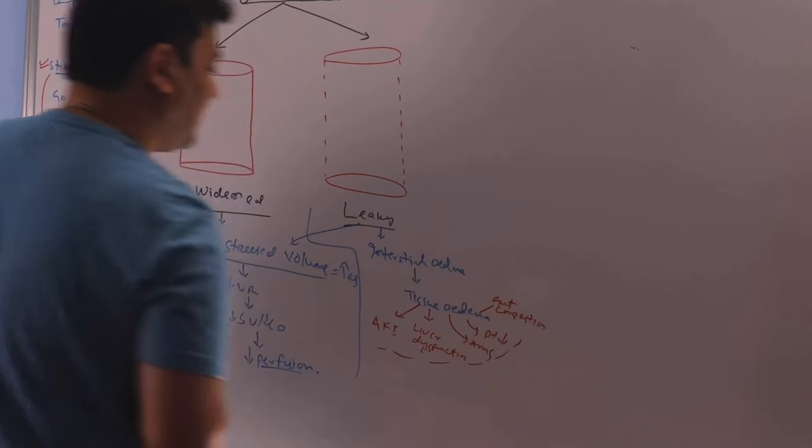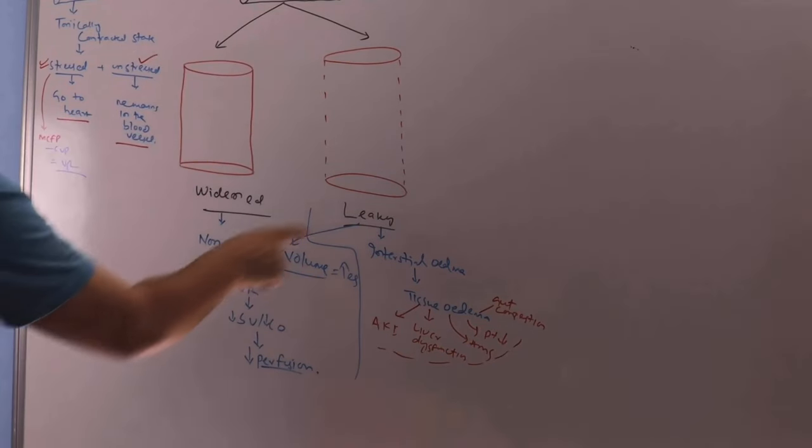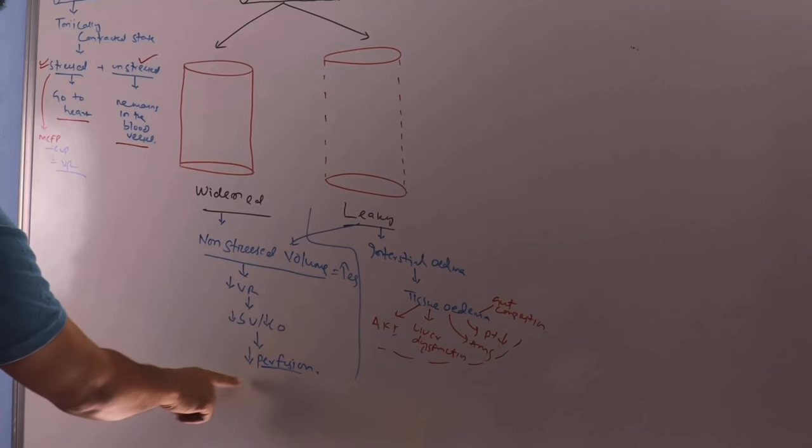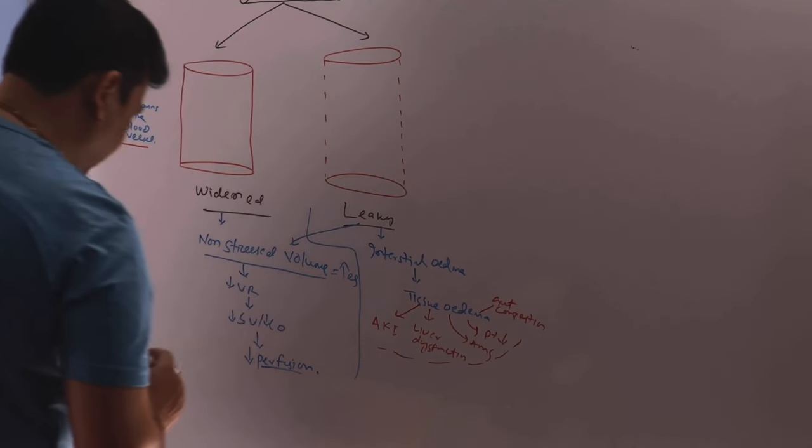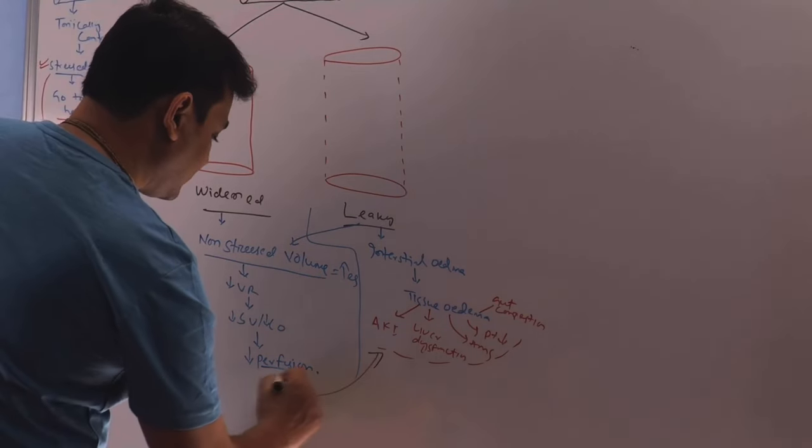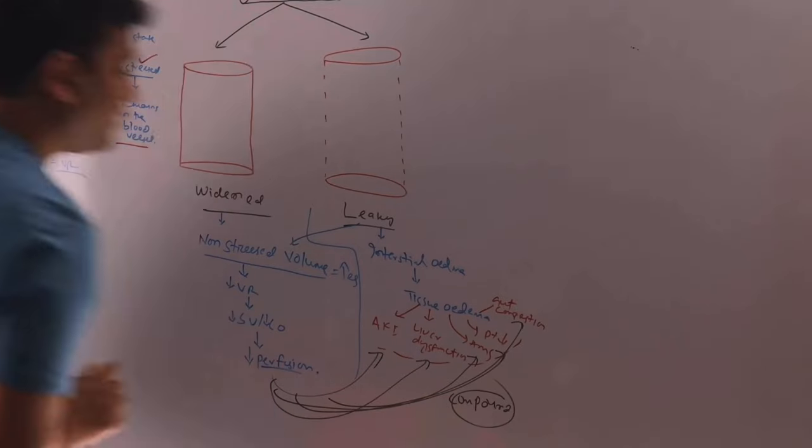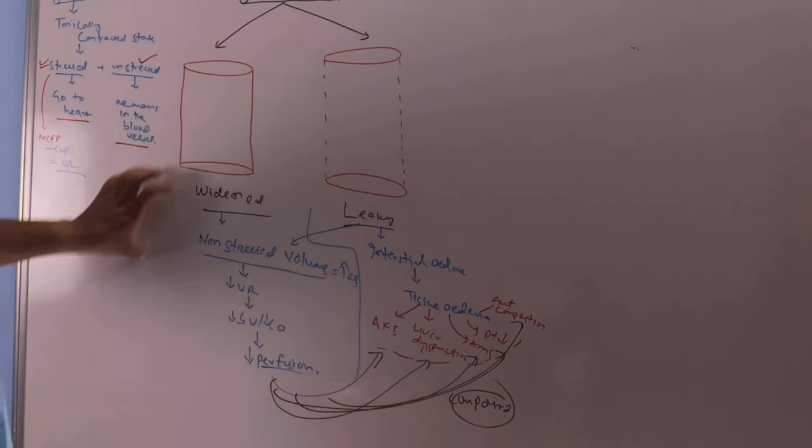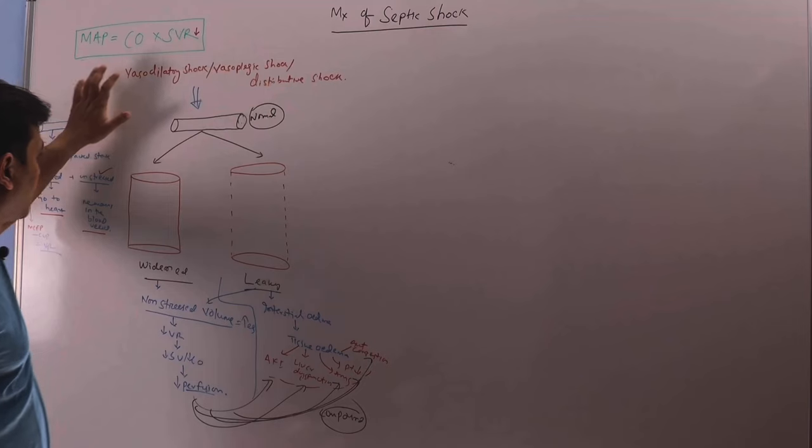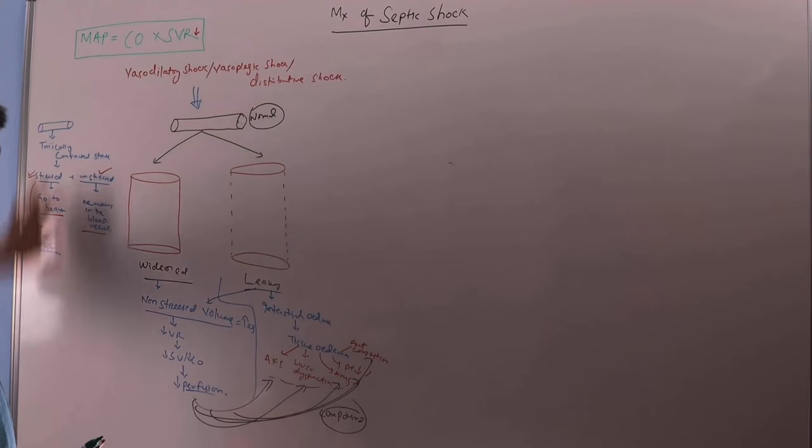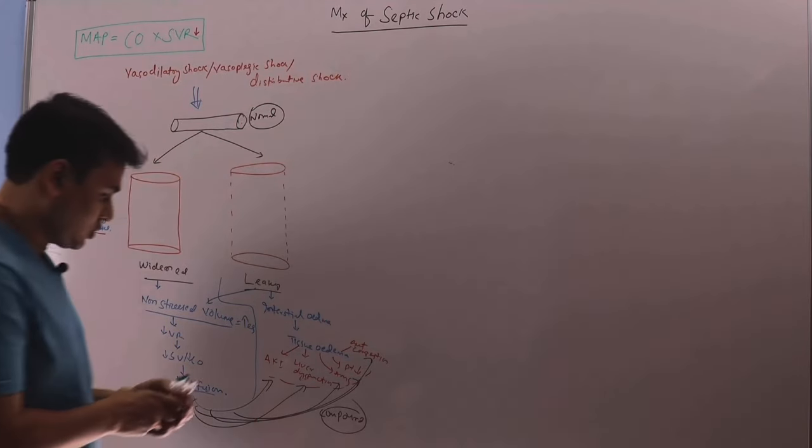These are the manifestations of septic shock. And at the same time they will decrease the venous return which will decrease the perfusion and this perfusion will compound all these things, all the organ dysfunction. You can see that how it is a very complex syndromic phenomenon, septic shock. So now based on this diagram, let's try to understand the management of septic shock.